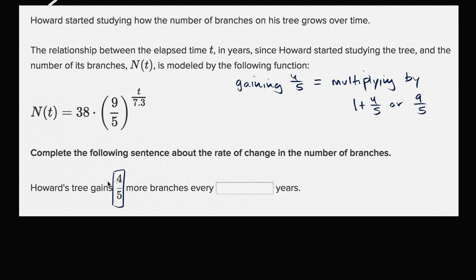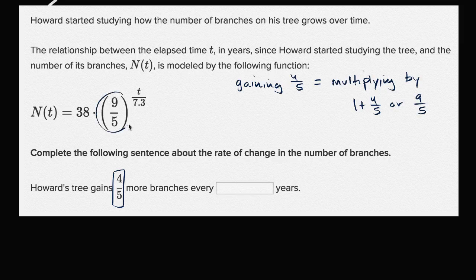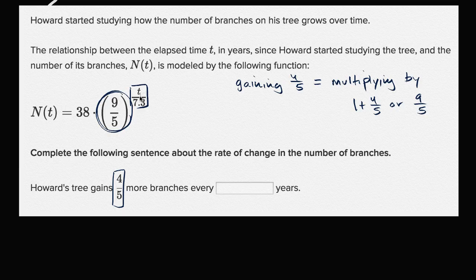So Howard's tree, you could say, grows by a factor of 9 fifths every how many years? Well, you could see over here the common ratio is 9 fifths, and so you're going to grow by 9 fifths every time t is a multiple of 7.3, or every time t increases by 7.3.